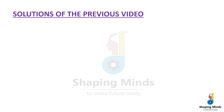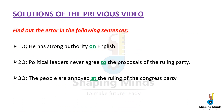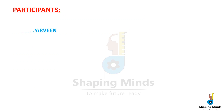So guys, here are the solutions from our previous video: 'He has strong authority on English,' 'Political leaders never agreed to the proposals of the ruling party,' and 'The people are annoyed at the ruling of the Congress party.' The participants from our last video are Zaba Parveen and Muhammad Saif. Many many congratulations to both of them!